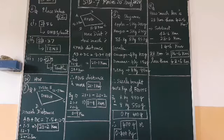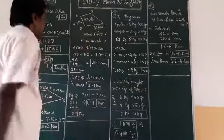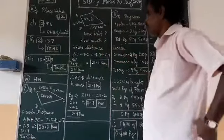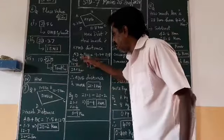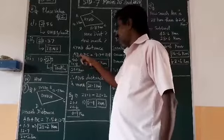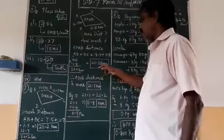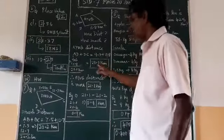Same thing for Ayu. Ayu's distance is AD plus DC. AD is 9.3, DC is 11.8. If you add the same way: 9.3 and 11.8. Decimal, decimal, decimal should be in a straight line and add the numbers. 3 plus 8 is 11, carry 1, 9 plus 1 plus 1 is 11, so 21.1 km. So Ayu has traveled 21.1 km.